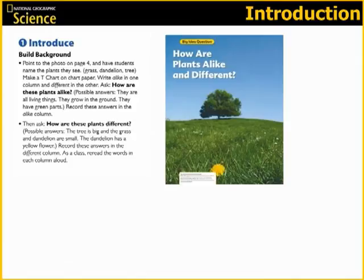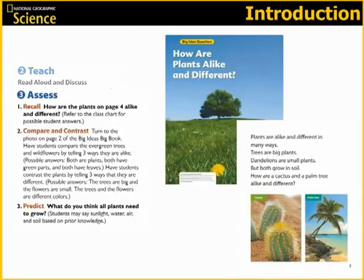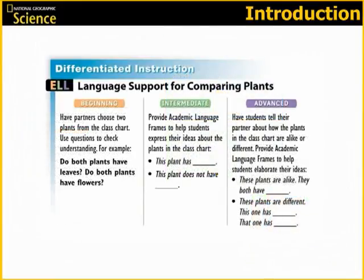The next lesson is an introduction that will only take place at the beginning of each topic. Begin by building background using the photos provided and asking questions. Then read the introduction aloud and discuss. Finally, assess students' grasp of the science content by asking the questions provided. This lesson also includes differentiated support for English learners as they participate in the discussion.